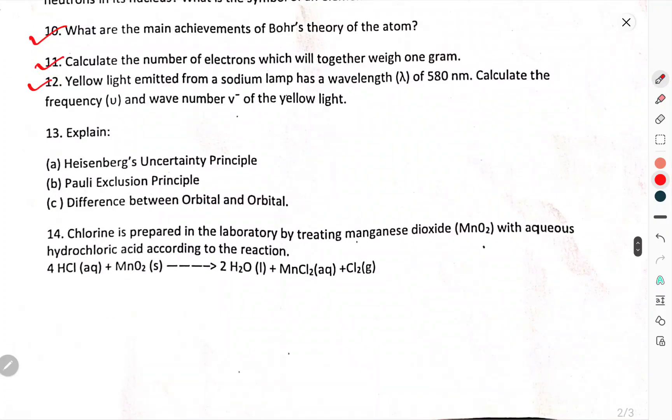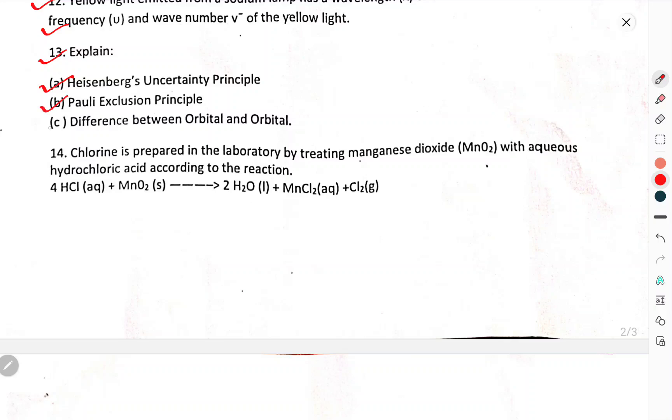12. Yellow light emitted from sodium lamp has wavelength lambda equals to 580 nm. Calculate the frequency nu and wave number nu bar of the yellow light. Explain the Heisenberg uncertainty principle, Pauli's exclusion principle, and difference between orbital and orbital.